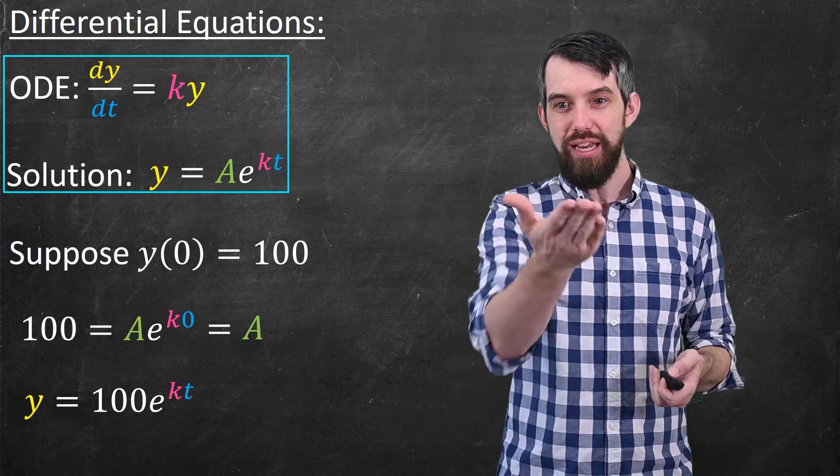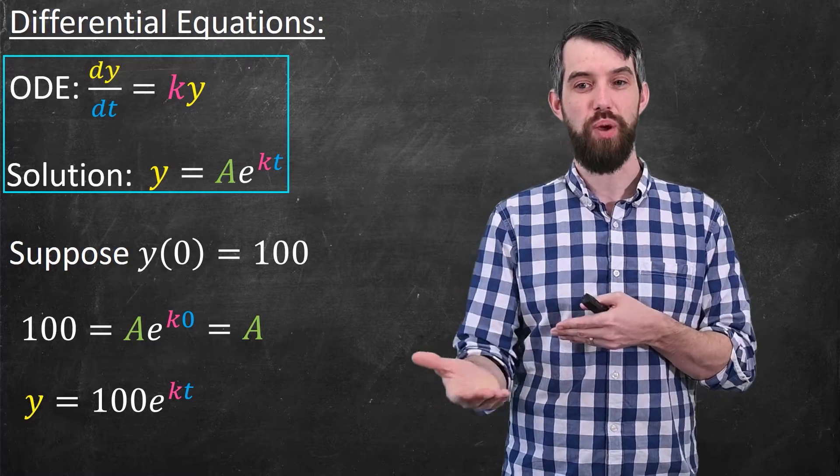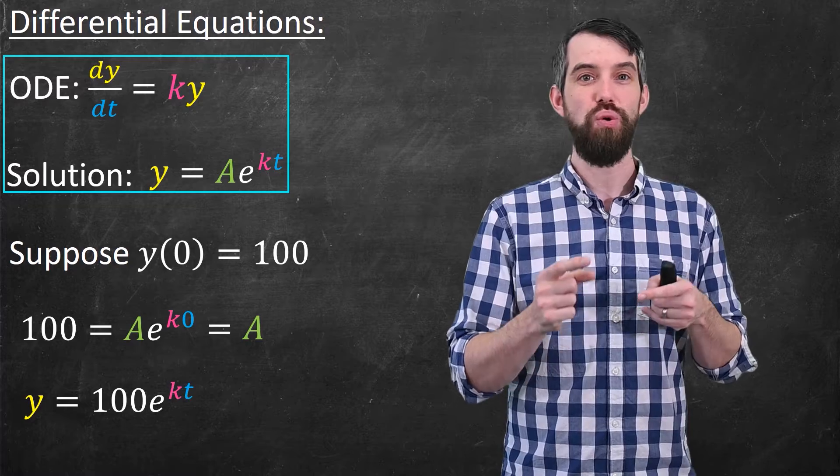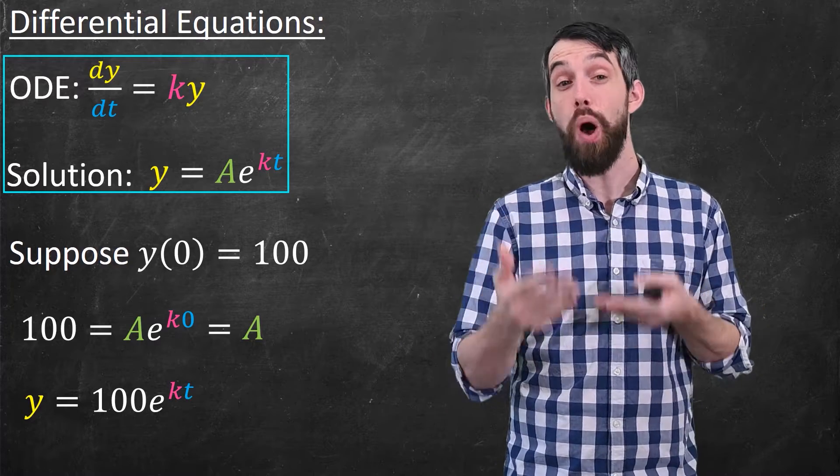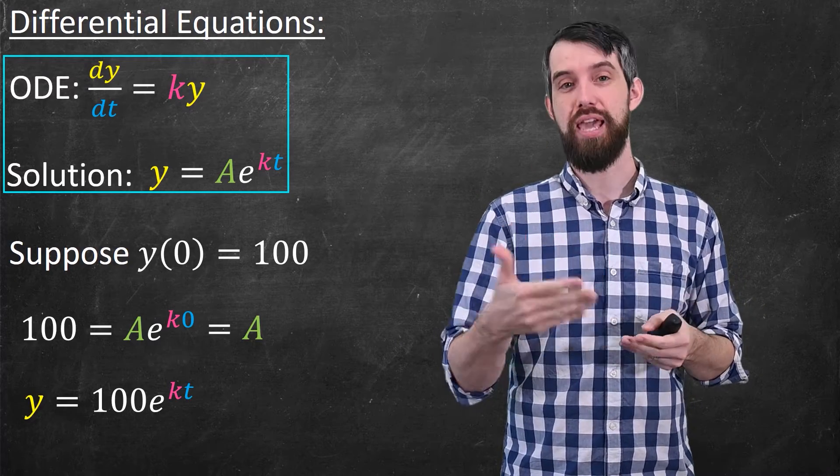In other words, my initial condition, that y of zero is 100, tells me what the A is, so now I have a more specific solution. y is 100e to the kt.